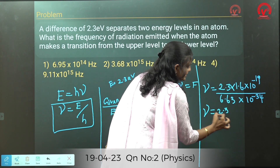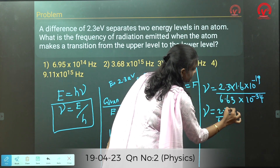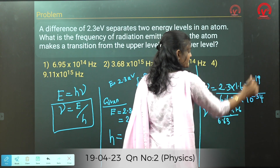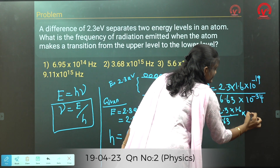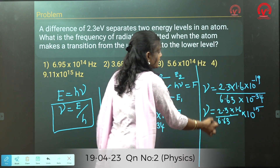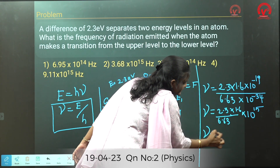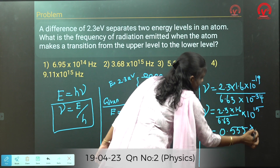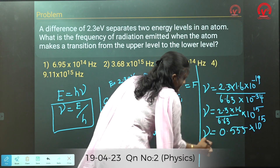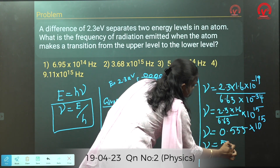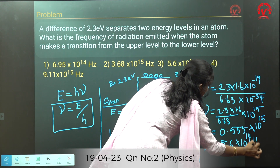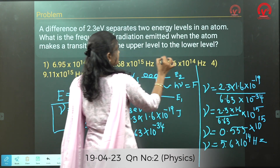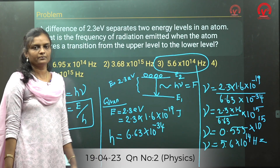Taking 10⁻³⁴ from the denominator to the numerator, it becomes positive, giving 10¹⁵. Carrying out the calculation gives 0.555 × 10¹⁵, which can be written as ν = 5.6 × 10¹⁴ Hz. So the answer is 5.6 × 10¹⁴ Hz.